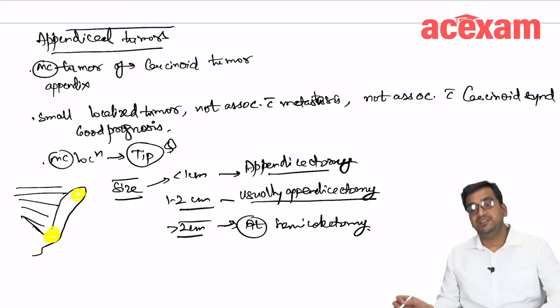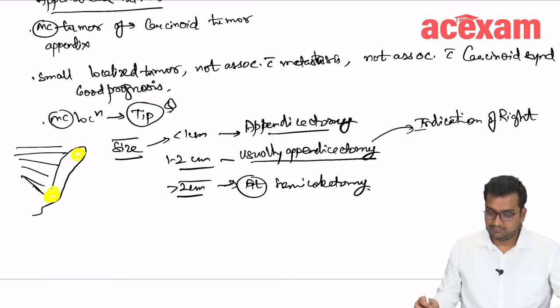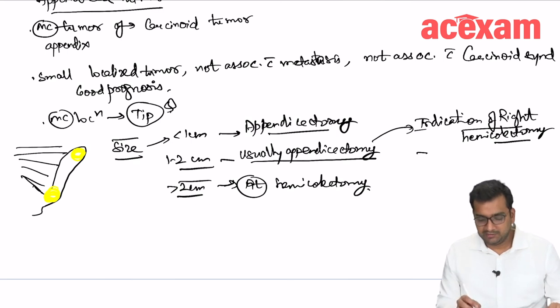There are certain features which need right hemicolectomy. Indications of right hemicolectomy. These indications are if the tumor is involving the mesoappendix or if it is involving the base of appendix and if there is presence of lymph nodes.